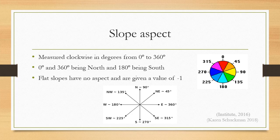How do we measure slope aspect? It is measured clockwise in degrees from 0 to 360 degrees, with 0 being north.